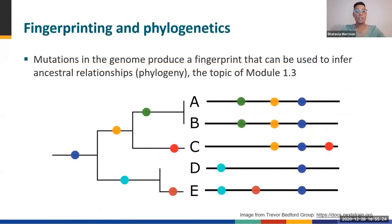Viral genomes randomly mutate at a certain rate. Mutations can be introduced into the genome by various different mechanisms. Those mutations leave behind genetic fingerprints that can be used to infer ancestral relationships, like a family tree among strains. Identification of the ancestral relationship is helpful in depicting the genetic relatedness between sequenced strains. Phylogenetics is a central concept for genomic epidemiology that will be covered more in depth in Module 1.3, as we explore how to read phylogenetic trees.